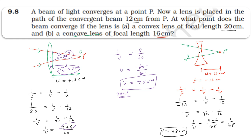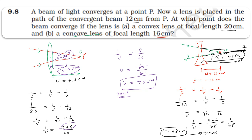So the concave lens diverges the incident converging beam, but the image distance is positive at 48 cm, meaning the image is formed on the other side. The image formed is a real image. So in this question, the object is a virtual object, and in both cases — convex lens and concave lens — a real image is formed.